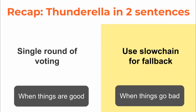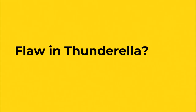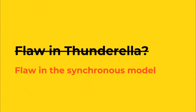Just to quickly summarize: Thunderella is a very simple paradigm. When things are good we have a single round of voting to confirm each transaction, and when things are not so good we just use the slow chain to fall back and maybe re-bootstrap the fast path. The paper is quite painful to write because we had to write 74 pages of mathematical proofs. But I want to talk about the more exciting part — what is this mysterious flaw in Thunderella? And importantly, it's not a flaw with the proof; it's a flaw with this 30-year-old model.